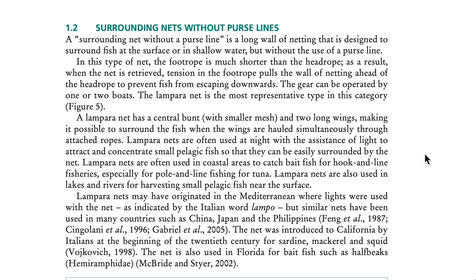A lampara net has a central bunt with smaller mesh and two long wings, making it possible to surround fish when the wings are hauled simultaneously through attached ropes. Lampara nets are often used at night with the assistance of light to attract and concentrate small pelagic fish so they can be easily surrounded by the net. They are often used in coastal areas to catch bait fish for hook and line fisheries, especially for pole and line fishing for tuna, and also in lakes and rivers for harvesting small pelagic fish near the surface.